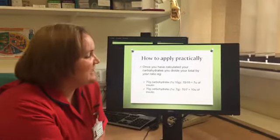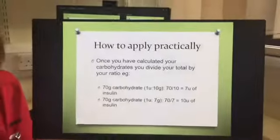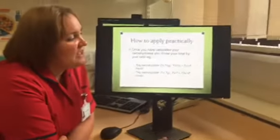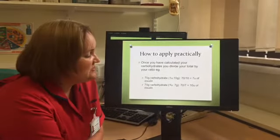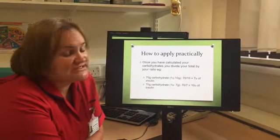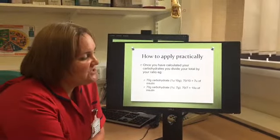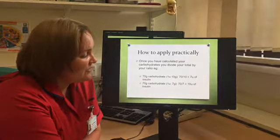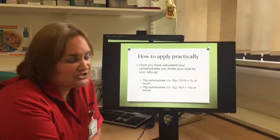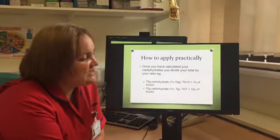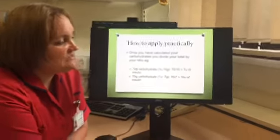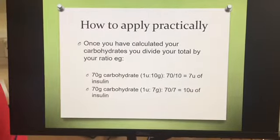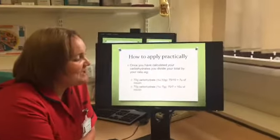How do you apply these ratios practically? Because we work with total grams of carbohydrates, you calculate your total carbohydrate for your meal and divide it by whatever your ratio is. For example, 70 grams of carbohydrate using a one unit to 10 gram ratio: 70 divided by 10 gives you 7 units of insulin for that meal. However, if you are using a one unit to 7 gram ratio, for that same meal you divide by 7, so 70 divided by 7 gives 10 units of insulin. It's quite a simple way — you just have to get used to your times tables.